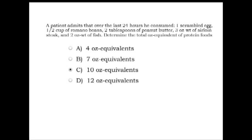Question two: a patient consumed one scrambled egg, half a cup of romano beans, two tablespoons of peanut butter, three ounces of soy steak, and two ounces of fish over 24 hours. Counting protein ounce equivalents: one egg = 1, half cup romano beans = 2, two tablespoons peanut butter = 2, three ounces soy steak = 3, two ounces fish = 2 — for a total of 10 ounce equivalents of protein.